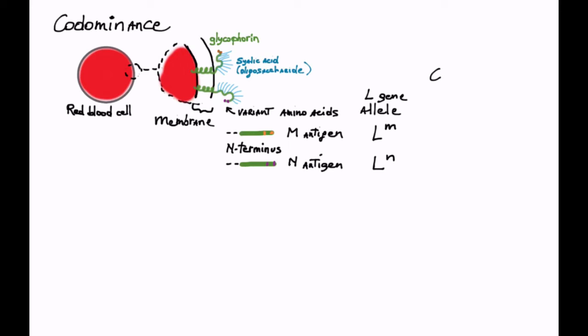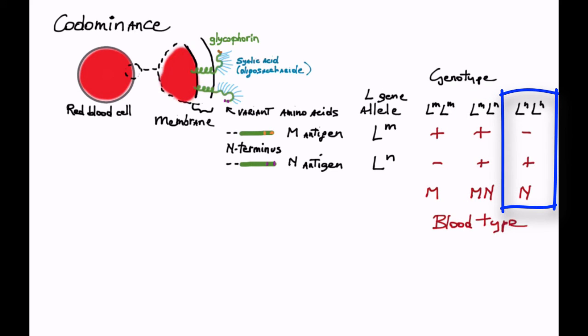Let's look at the three possible genotypes. L M L M results in the formation of M antigenic blood cells because only the M glycophorin is present. The heterozygote L M L N results in M N antigenicity because both glycophorin types are made, while the L N L N homozygote results in N antigenicity.